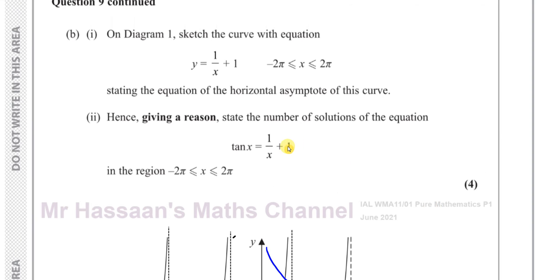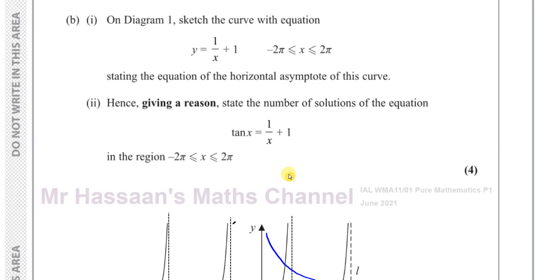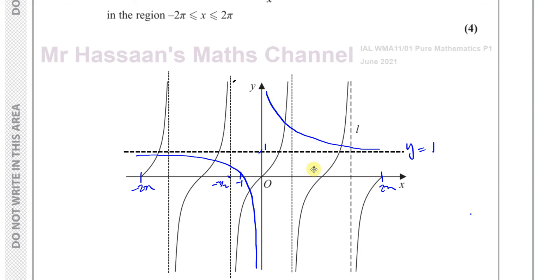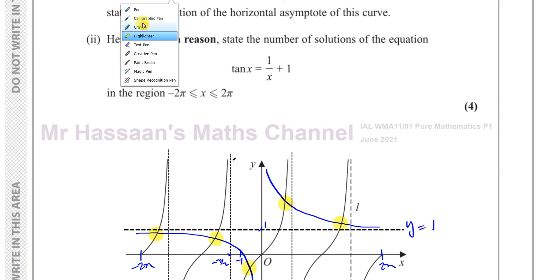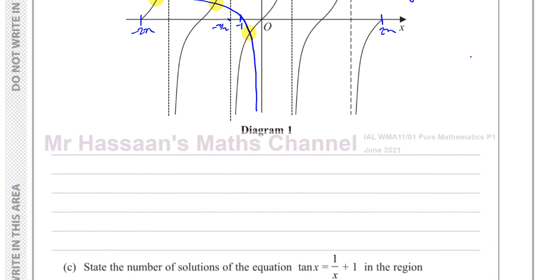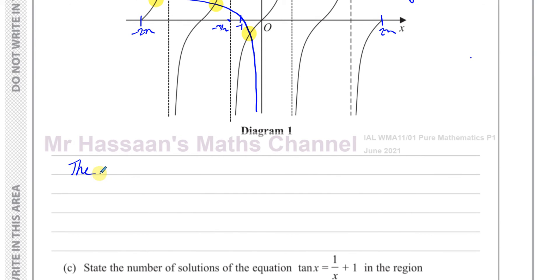Now, between minus 2 pi and 2 pi, the number of solutions is the number of times the two curves intersect. You can see the curves intersect one time here, one time there, and one time there on the positive side. And here one time, and one time on the negative side. The next intersection would be past 2 pi or past minus 2 pi. So there are five places where the two curves intersect.